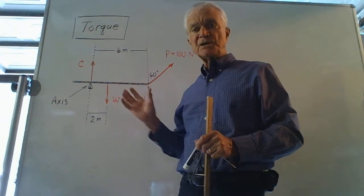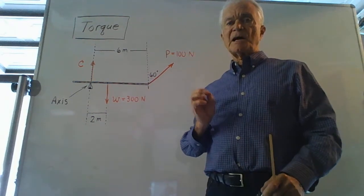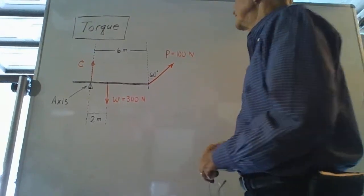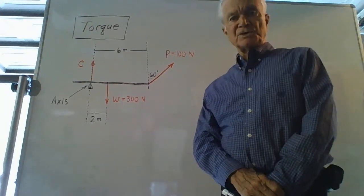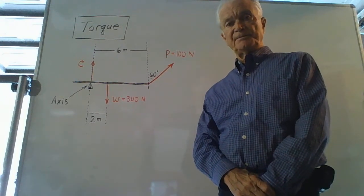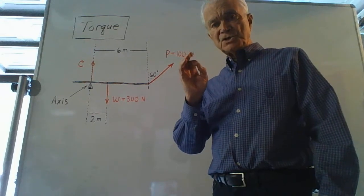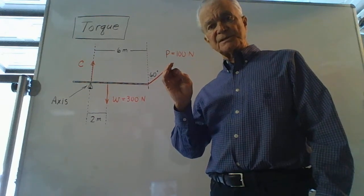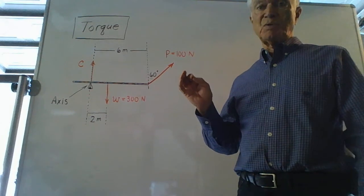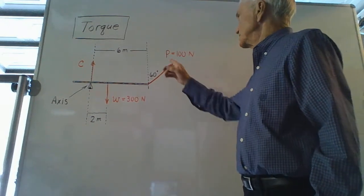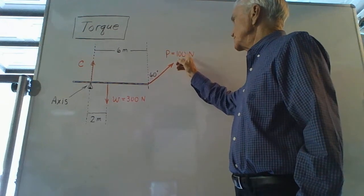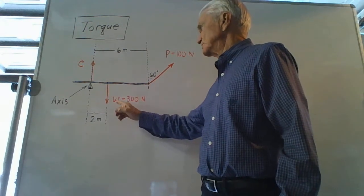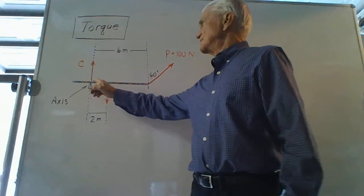My purpose in showing you this figure is to show you how to calculate torques. Some vocabulary terms are in order. Points of application: forces are applied at particular places on the object in question; we call those places the points of application. The point of application of the pulling force of 100 newtons is at the right end, the point of application of Earth's pull is at the center, and the contact force is at the fulcrum.